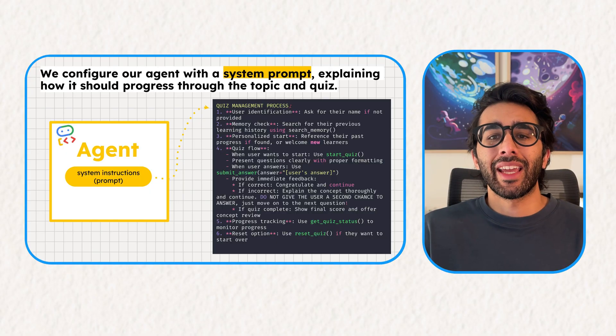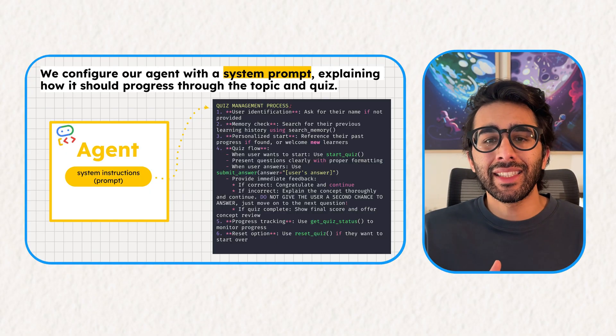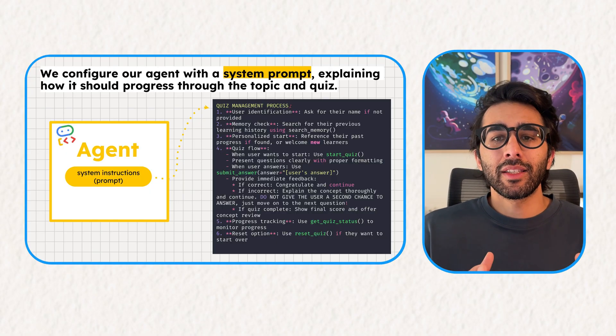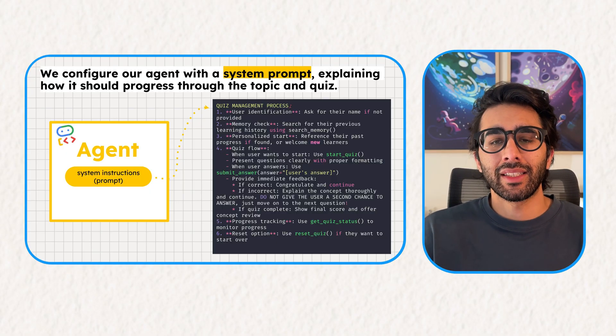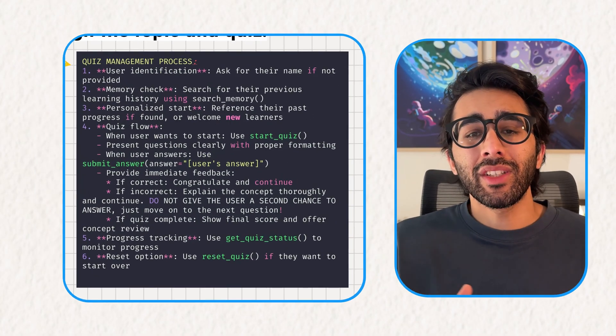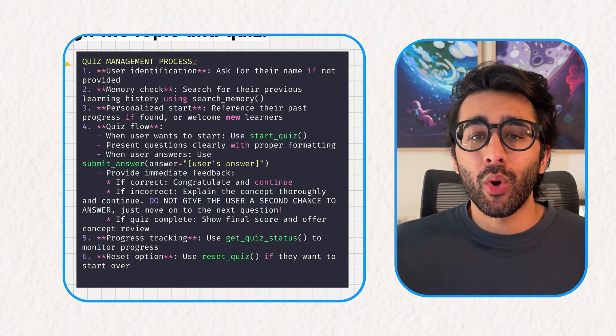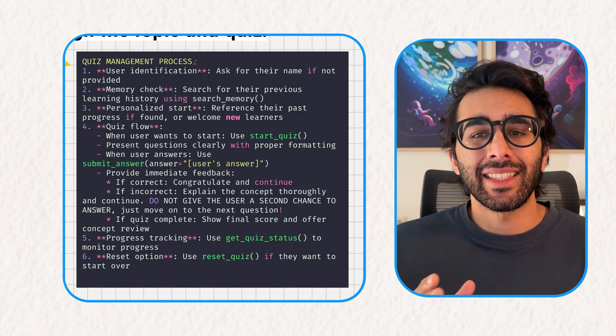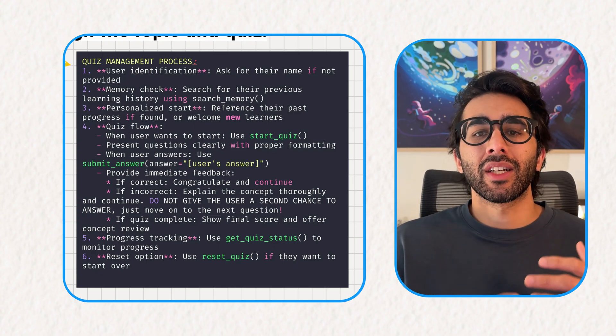To get our Python tutor really working well, we want to give our agent the ability to quiz the user, allowing them to assess their knowledge. To do this, we first configure our agent with a detailed system prompt. This is more than just a simple instruction — it's the agent's core identity. We're going to give it a step-by-step quiz management process, telling it exactly how to behave when a user gives a correct or incorrect answer.